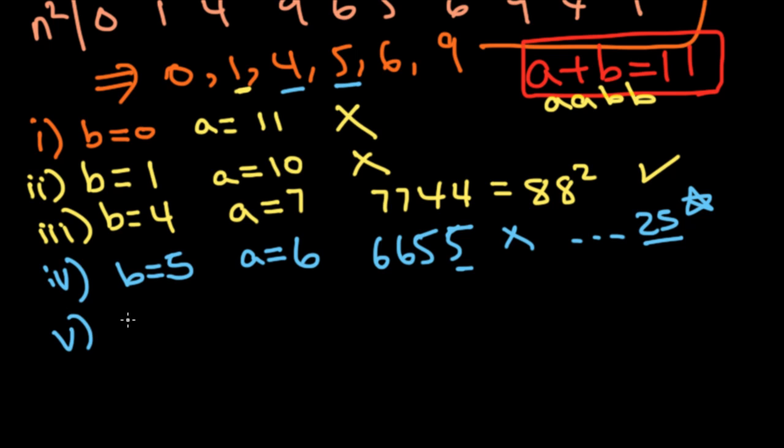And the fifth case is when B equals 6 and A equals 5. And our four digit number is 5566. Again, you can try this out, but this is not a perfect square.